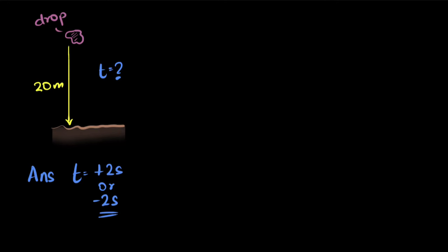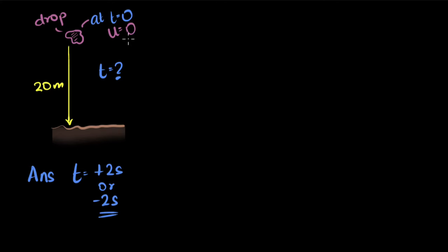When we solve this problem, we say the stone is dropped and therefore the initial velocity is zero. But what it really means is: at t equals zero, the initial velocity — which we often call u — is zero. So t equals zero basically means when you start your watch.